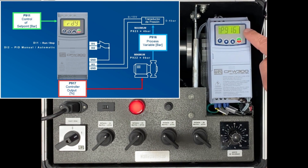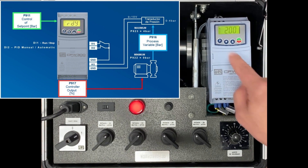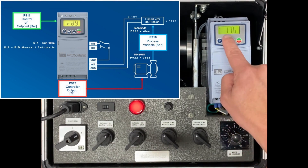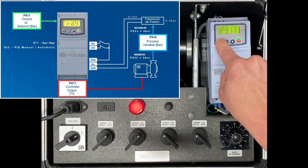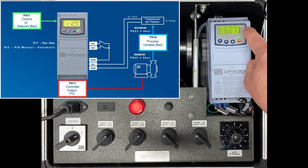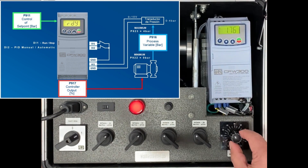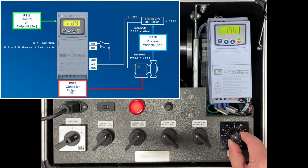Assuming now a real process, where the pressure measured in the system — which is the process variable — drops from the desired value, observe that an increase in motor speed takes place. This increase in motor speed causes an increase in the system pressure. The pressure is increased until we get the desired value equal to the measured one.